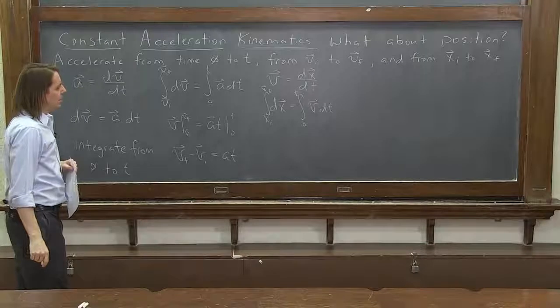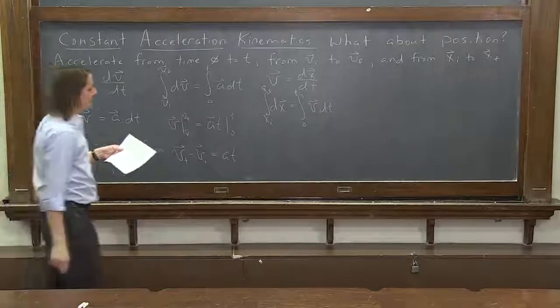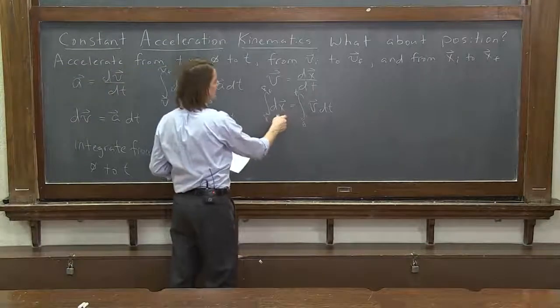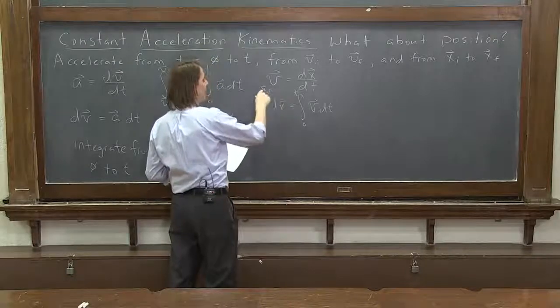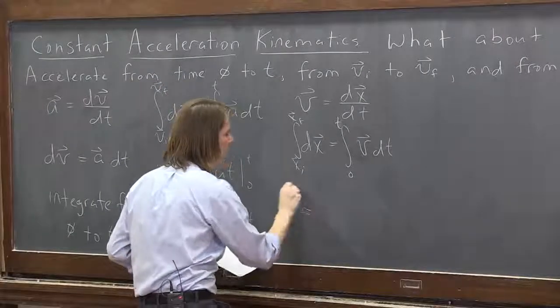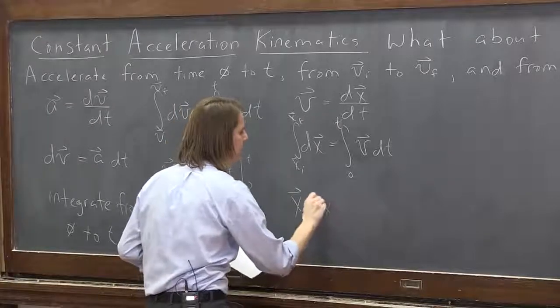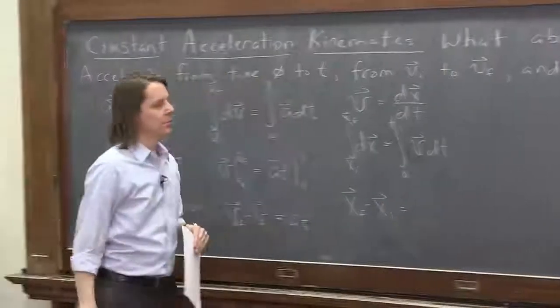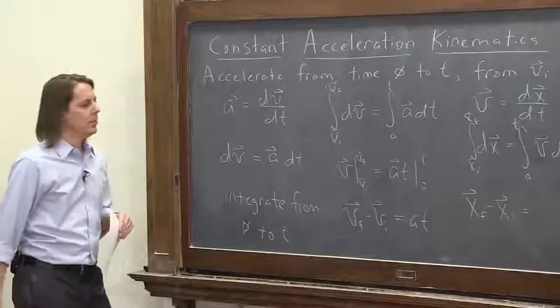Now let's see. The left side is easy to integrate. The integral of dx is just x. And we evaluate it at xf minus xi. All right. So this just becomes the final position minus the initial position. All right.